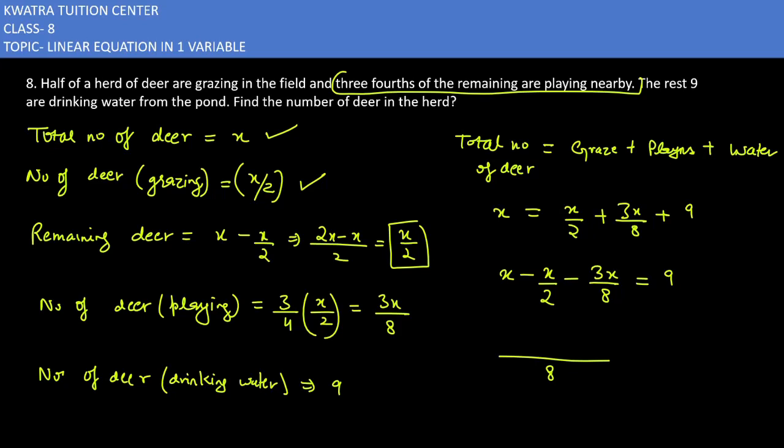The LCM would be 8. The first number will multiply by 8, giving you 8x. The second number will multiply by 4, giving you 4x. The second number will multiply by 2, so it will be 8 and 3x only. Right side is 9. Now what do you have? 8x minus 4x minus 3x. So x over 8 is equal to 9.